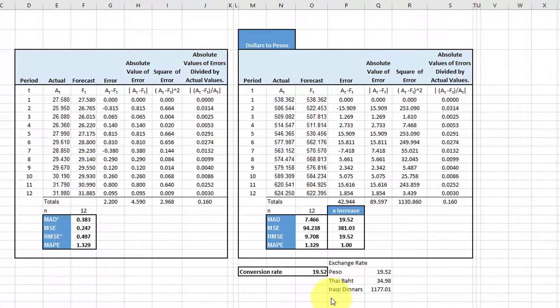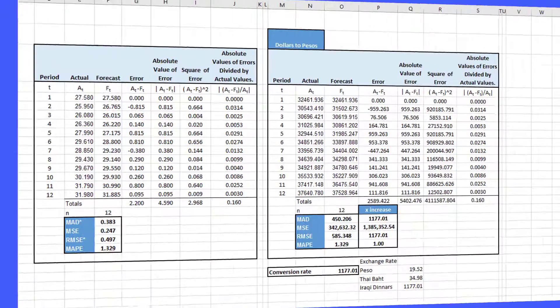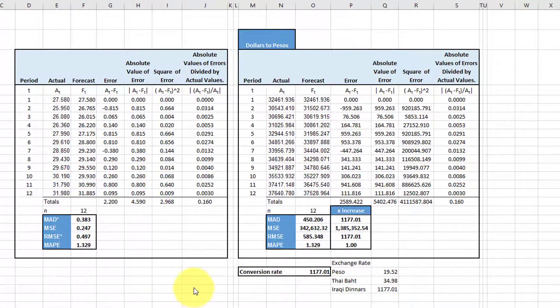Just to underscore that point, I'm going to change this conversion rate to 1177.01, which is the conversion rate for Iraqi dinars to dollars. After I recalculated the sheet, you can see again that the MAD, the MSE and the RMSE all just really jumped.